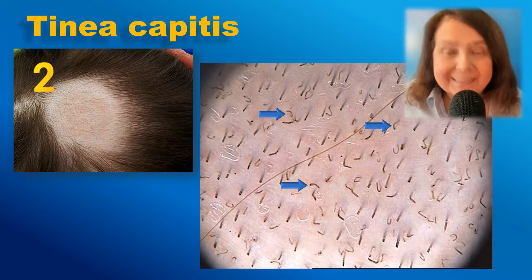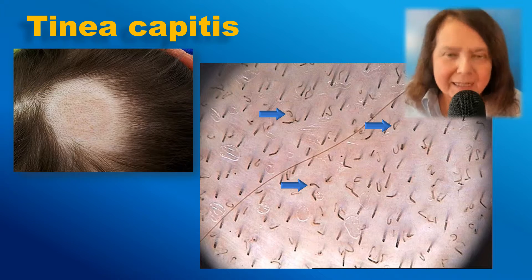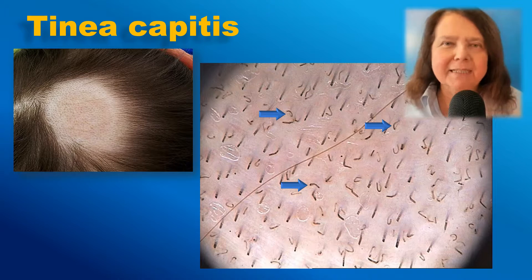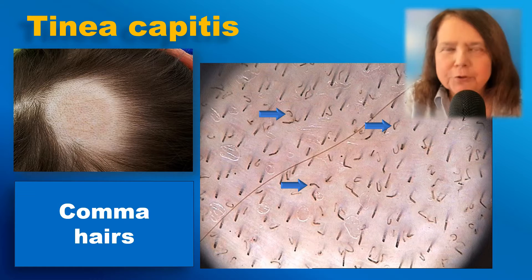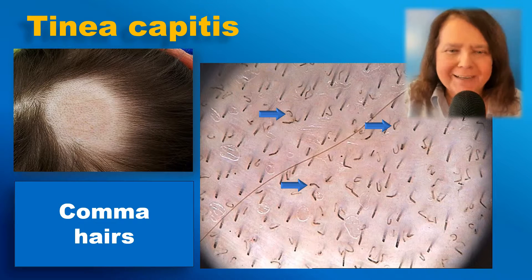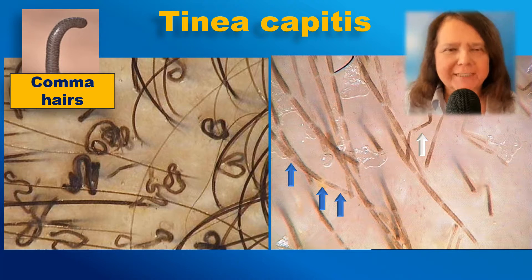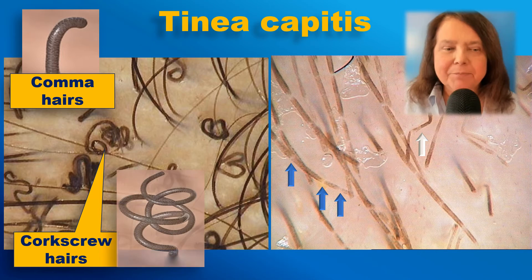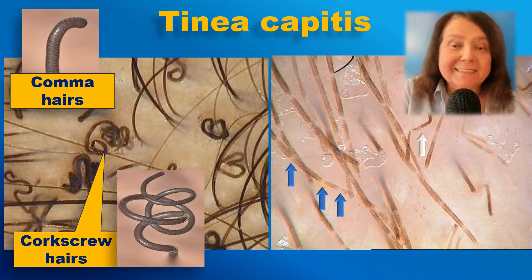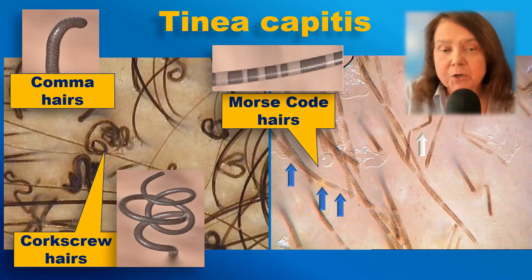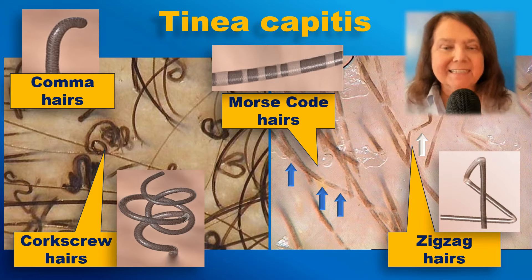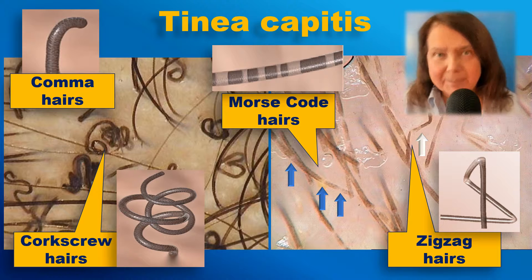Image number 2. Here we see a typical case of tinea capitis with multiple coma hairs, being a hallmark of tinea capitis in trichoscopy. There is a whole field of view full of coma hairs, and a few of them are marked with blue arrows. There are also some other typical trichoscopy features of tinea capitis, such as the presence of corkscrew hairs.